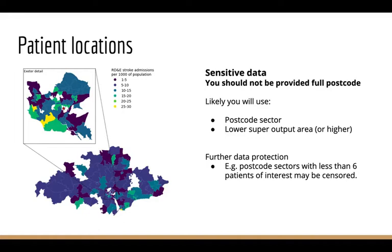There may also be further data protection. If the postcode sector you're working with has fewer than six individuals living in that area, that data may be censored from you — you may not know how many patients are in that area. This is to avoid any chance of identifying patients, not just during your analysis, but also when you publish, as others might then be able to identify who lives there.